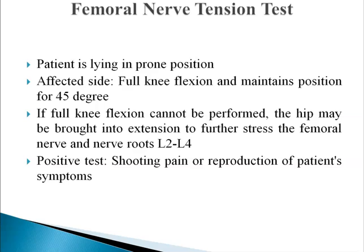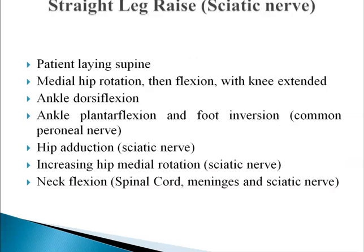A positive test is indicated by shooting pain or reproduction of the patient's symptoms. For the SLR sciatic nerve test, the patient lies supine with medial hip rotation, then flexion with knee extension, ankle dorsiflexion, ankle plantar flexion, and foot inversion indicating involvement of the common peroneal nerve. The hip is in adduction for the sciatic nerve, with increasing hip medial rotation stressing the sciatic nerve, and nerve flexion indicating spinal cord, meninges, and sciatic nerve involvement.